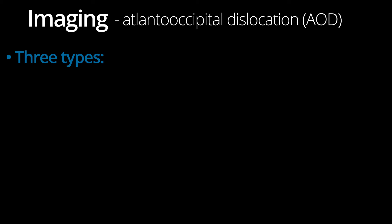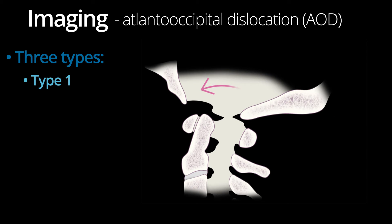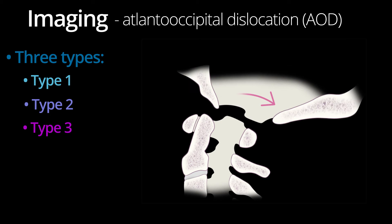There are three types of atlanto-occipital dislocation. Knowing the specific numbers is not important, just understand the concepts. Type 1 is anterior displacement of the head relative to the atlas. Type 2 is a posterior displacement of the occiput relative to the atlas.